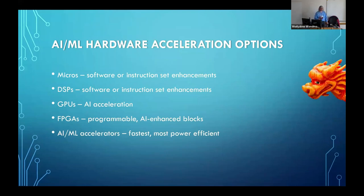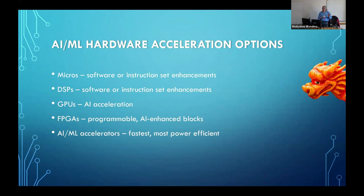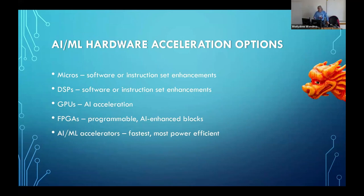Now we get into some of the hardware details. There are essentially a variety of ways to accelerate and utilize machine learning models. Microcontrollers are the mainstay, and it is possible to run some models on microcontrollers that have no AI acceleration at all, because it is possible to limit both the inputs and the functionality you're trying to use. The latest Cortex-M family processors have new instructions specifically designed to accelerate those kinds of AI algorithms.